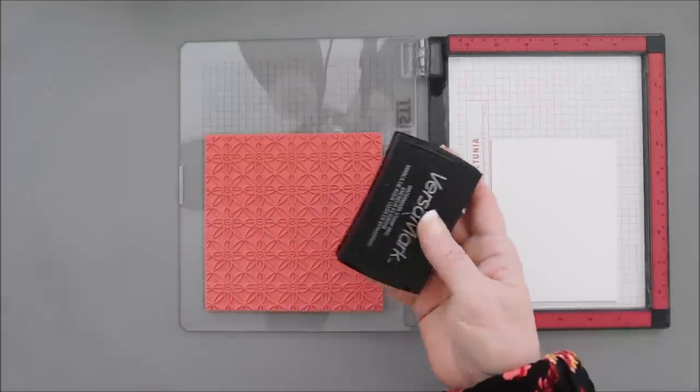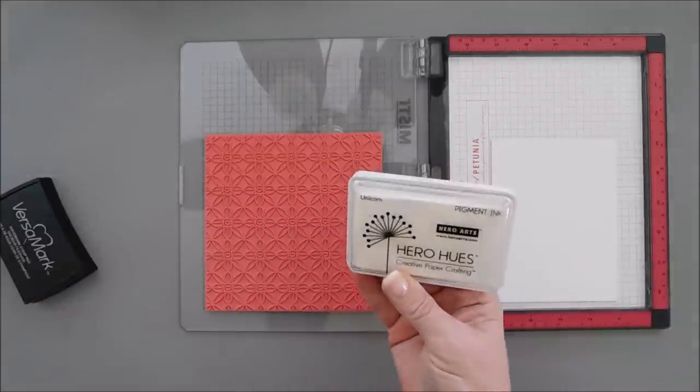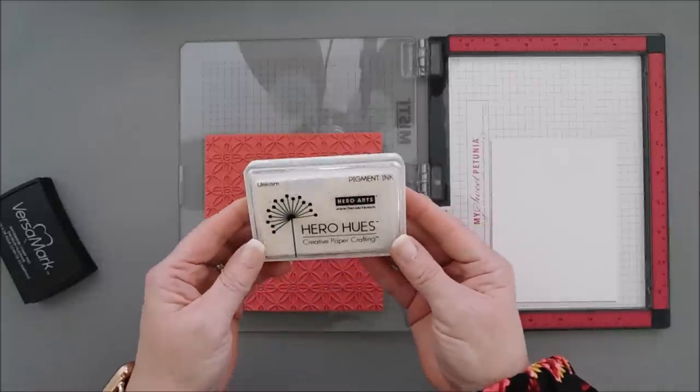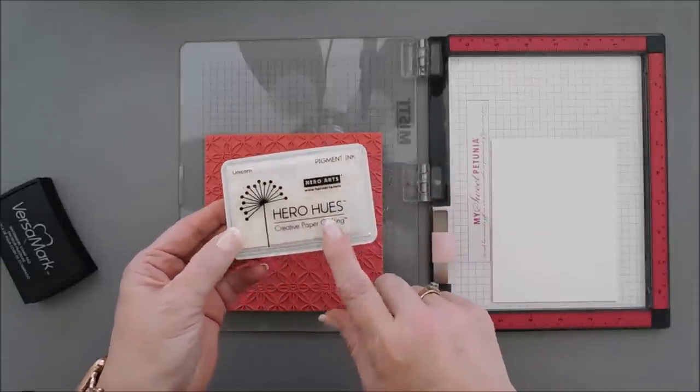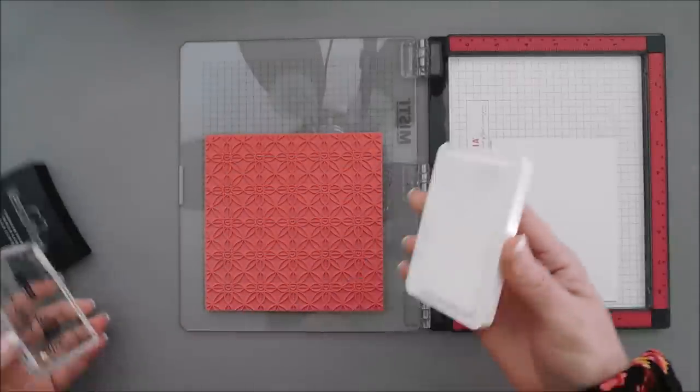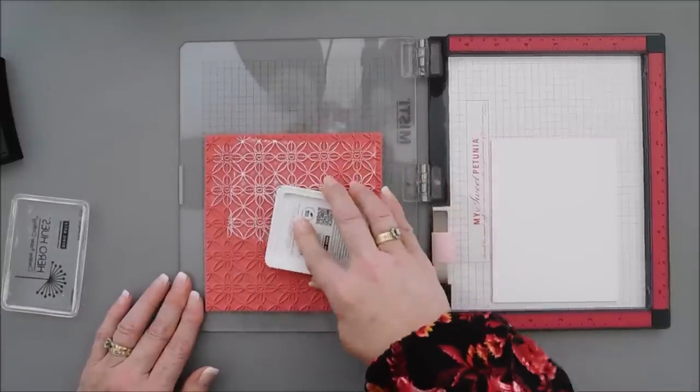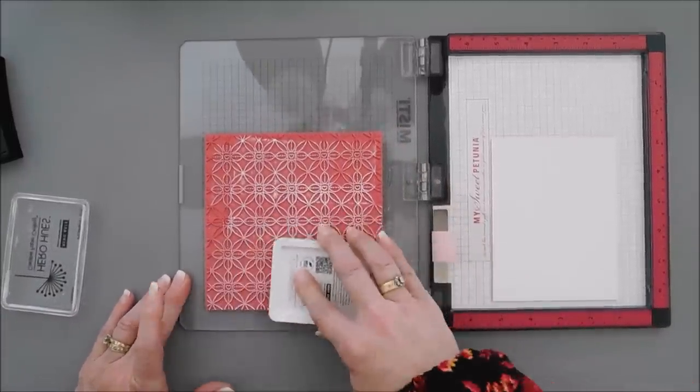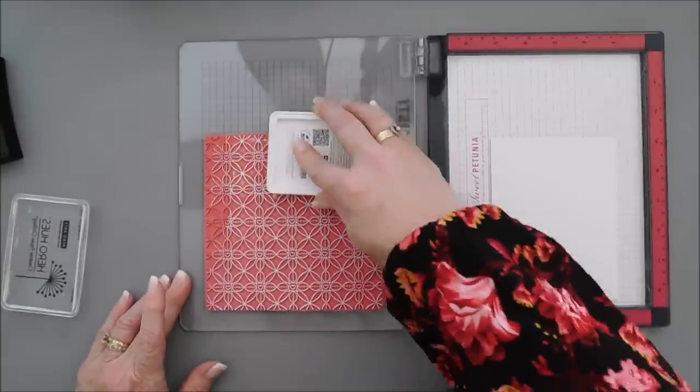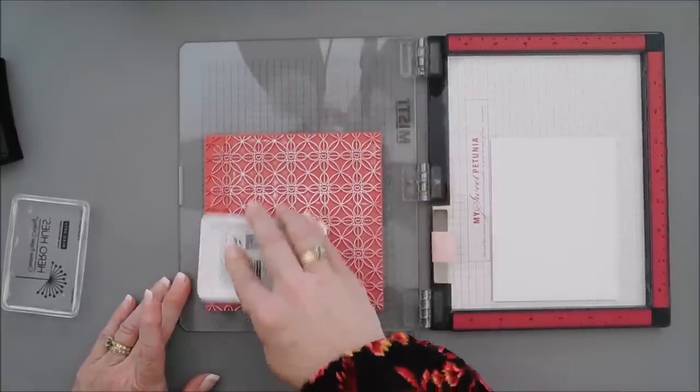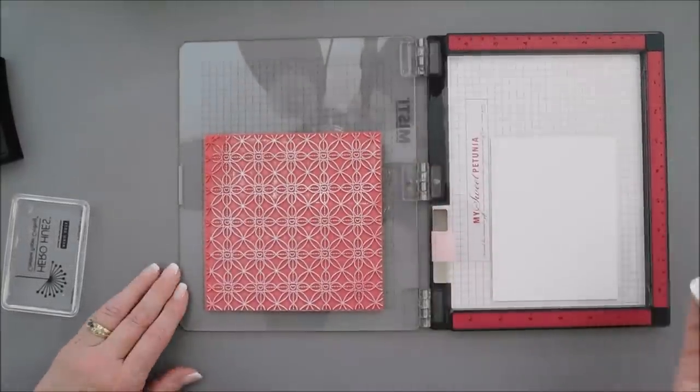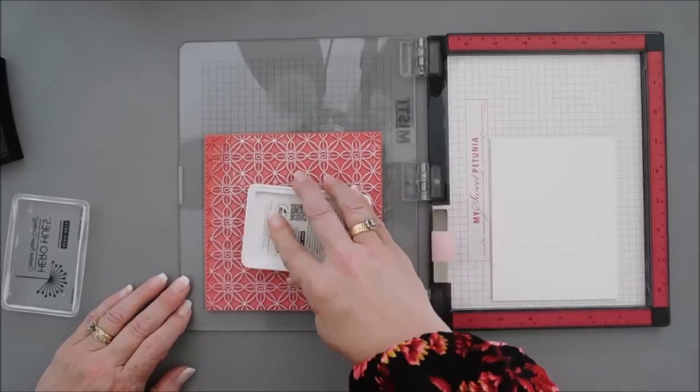Usually I like to use my Versamark ink, but I think I'm going to use my Hero Hues Unicorn ink. This is a white pigment ink. Embossing with white pigment ink is nice because you can actually see where you're inking up. Oh, that looks really pretty. That looks really pretty.